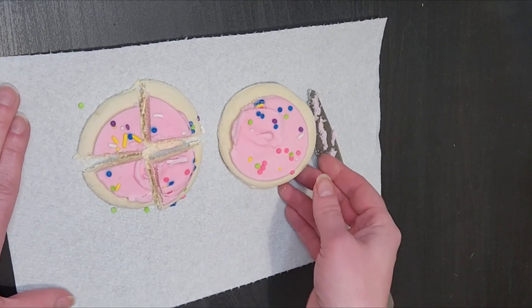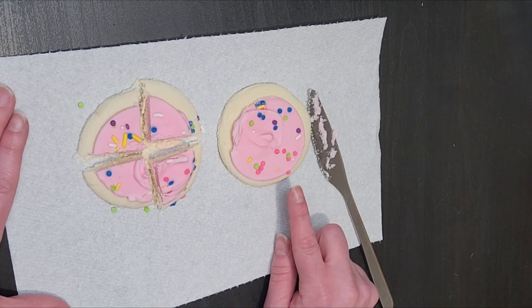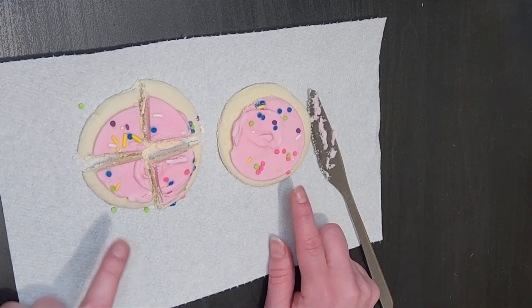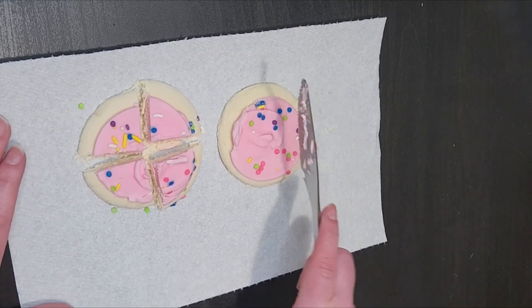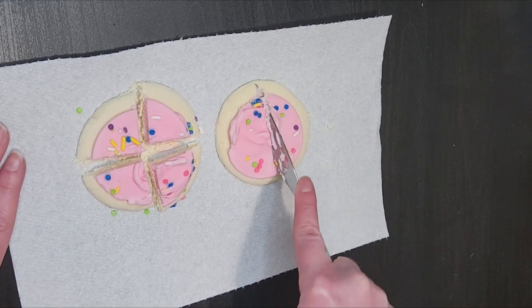We talk about how we have two whole cookies. We talk about how they are wholes of the same size. And then I ask them to cut the second cookie in half.